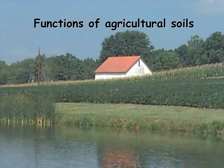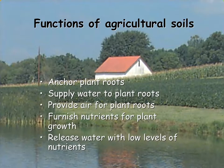In this session we will continue to consider how the organisms that live in the soil, and the complex interactions among them, give the soil its capacity to perform all these functions. To review: the functions of agricultural soil are to anchor plant roots, supply water to plant roots, provide air, furnish nutrients to plants, and release water with low levels of nutrients.